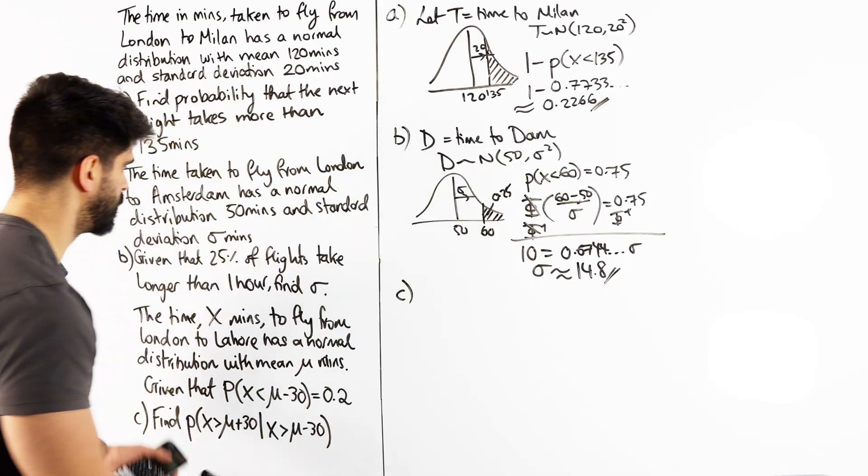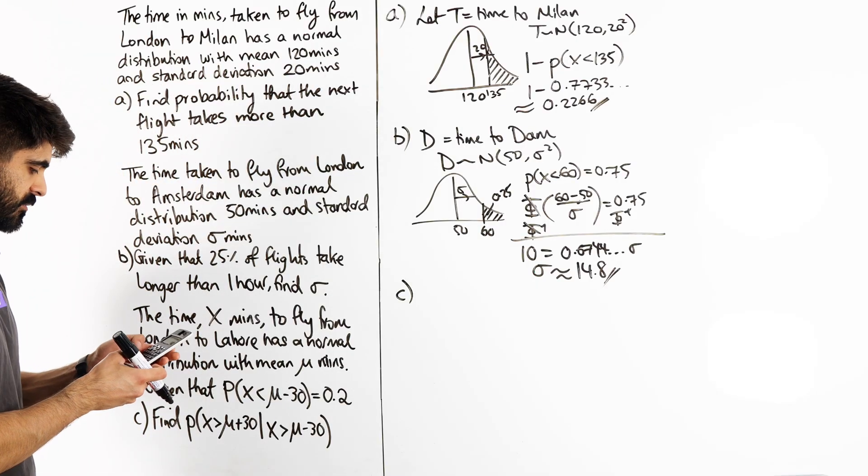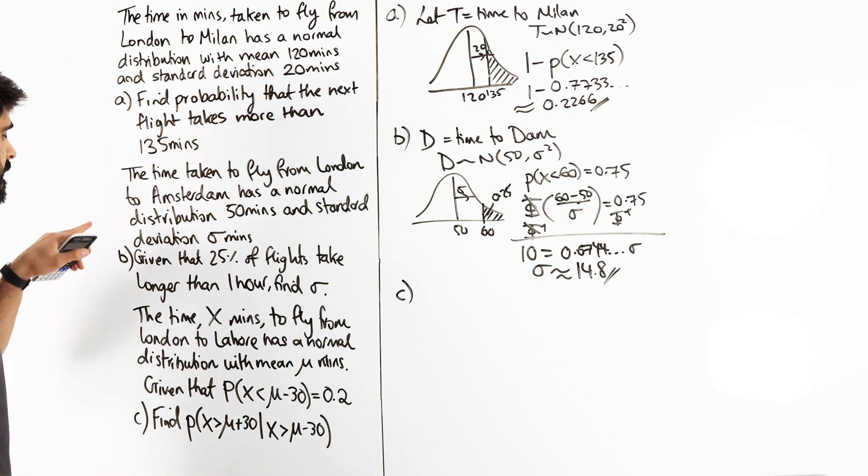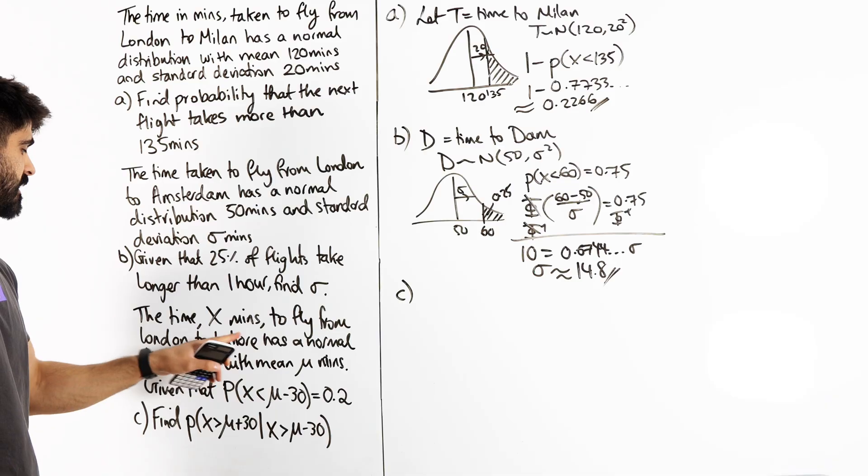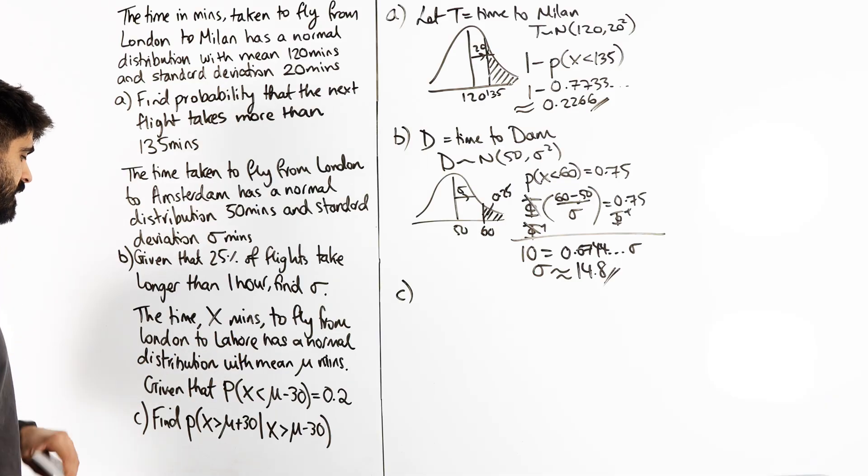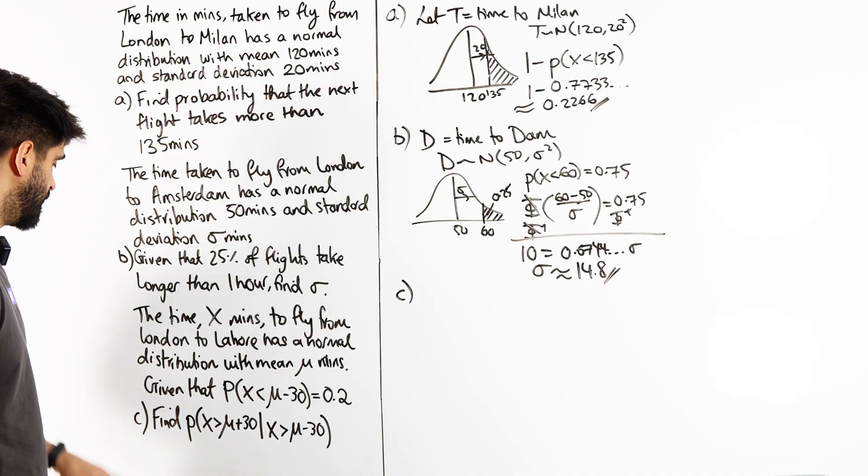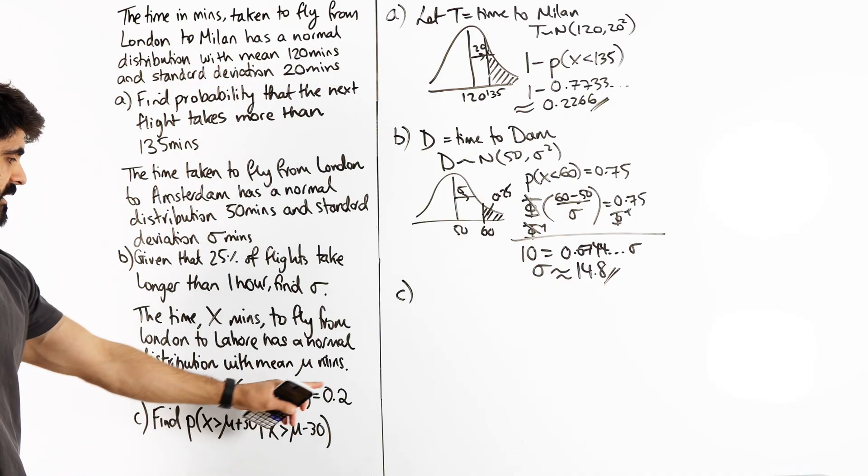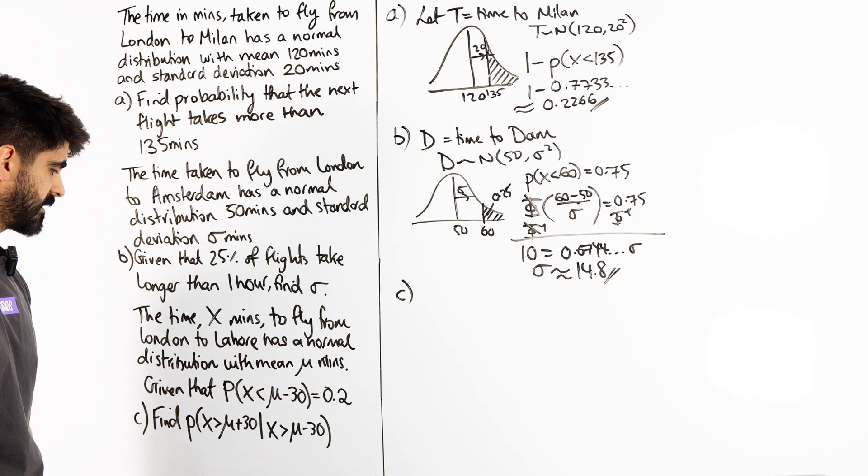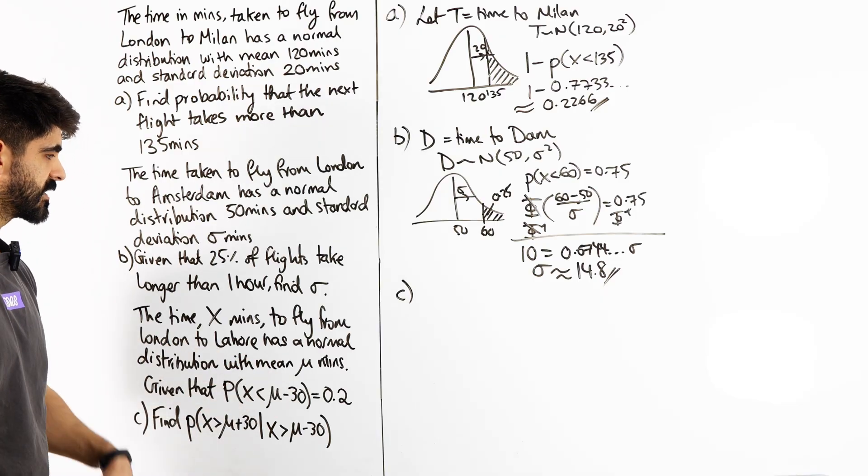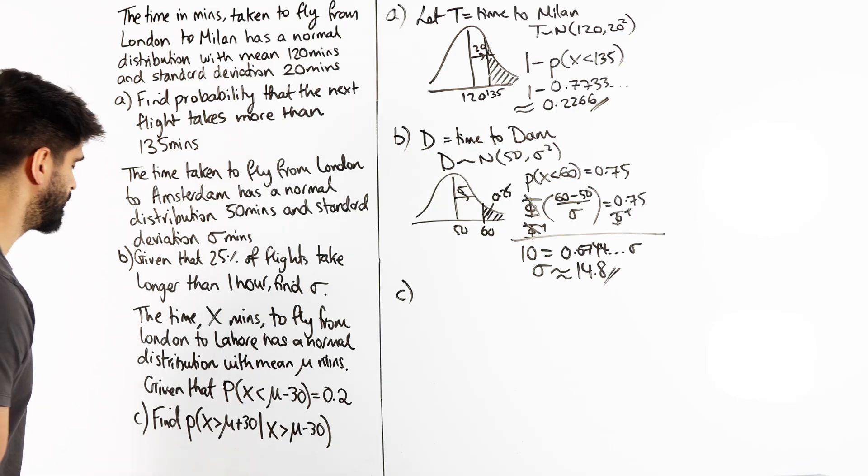Okay. Part two. This is what students struggle with all the time. What did I store as A? 0.67. Just checking my answer. The time X minutes to fly from London to Lahore has a normal distribution with mean mu minutes. Probably about 9.5 hours, whatever that is. Given that this probability is 0.2, find this probability. Okay. Forgetting all this, when I see this, I'm immediately thinking about my conditional probability statement.